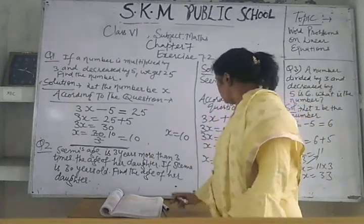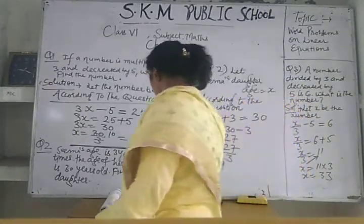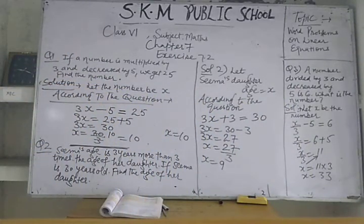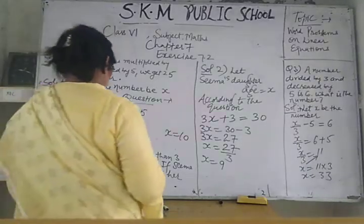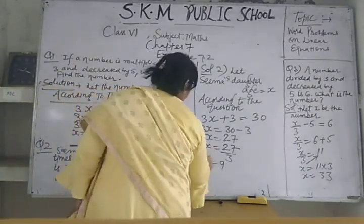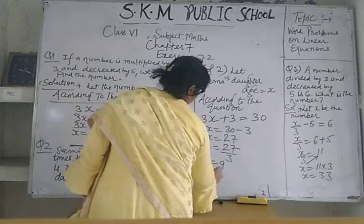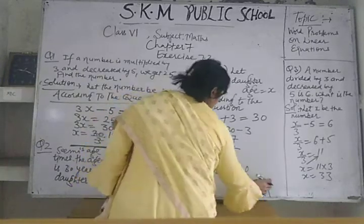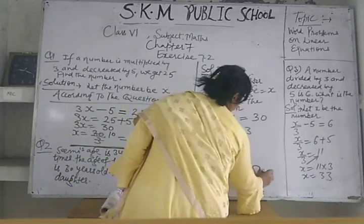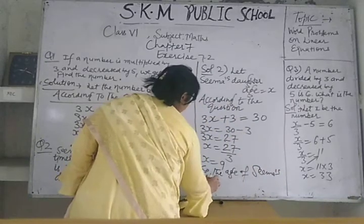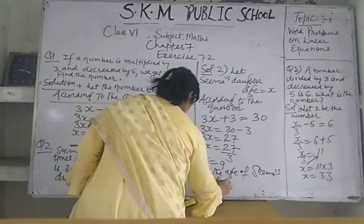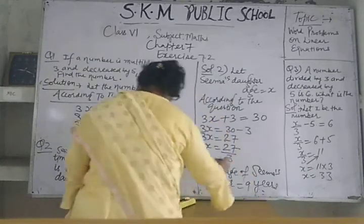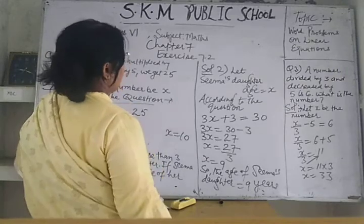x is equal to 9. Seema's daughter's age is 9 years — she is 9 years old. Her daughter is 9 years old.